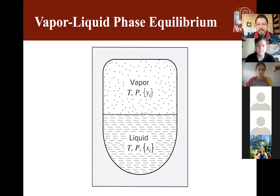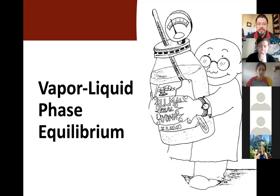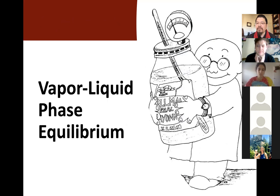The vapor-liquid equilibrium is illustrated with a cartoon showing how important it is for any production. We need to figure out the ratio between liquid and vapor to run catalytic reactions or separations. For vapor-liquid equilibrium, we look at temperature and pressure. Once we figure out T and P, we have all the equations to determine the fraction of liquid and vapor and the molar fraction within each phase.